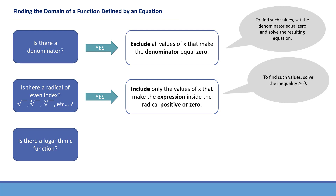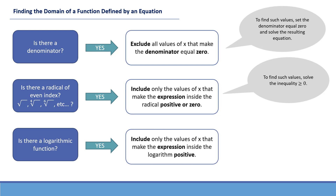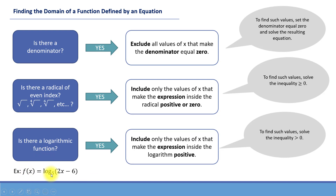Another typical situation with domain restrictions is a logarithmic function — we'll practice those in future videos. With logarithmic functions, the expression inside the logarithm can only be positive, so we set that expression greater than zero and solve. For example, if f of x equals log base 5 of 2x minus 6, the domain includes values of x such that 2x minus 6 is positive. We take 2x minus 6, write the inequality greater than zero, and solve it. We get x is greater than 3, which describes the domain of that function.